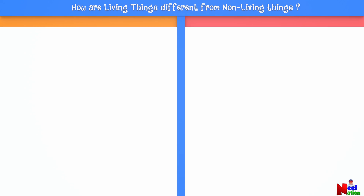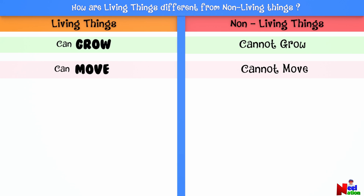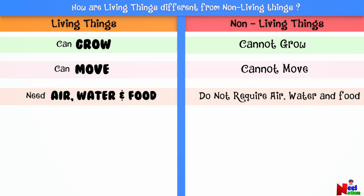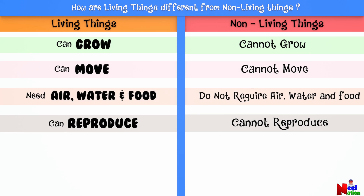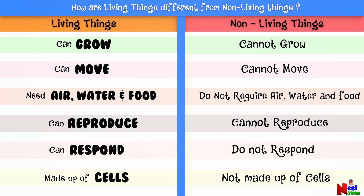Let's sum it up! What makes living things and non-living things different? Living things can grow; non-living things cannot grow. Living things can move, but non-living things cannot move. Living things respond to their environment, but non-living things do not respond. Living things are made up of cells, but non-living things are not made up of cells. Awesome!